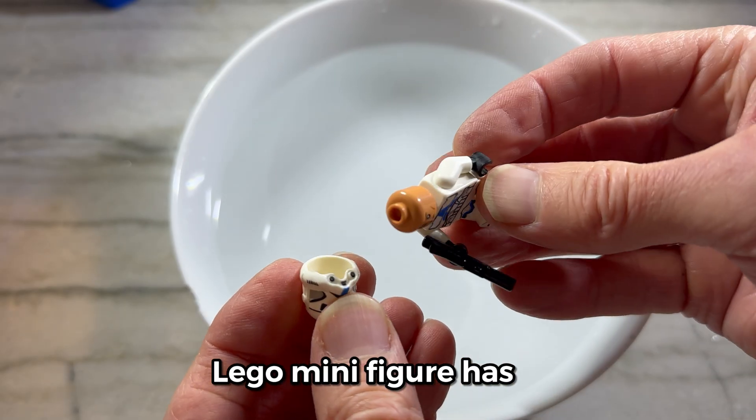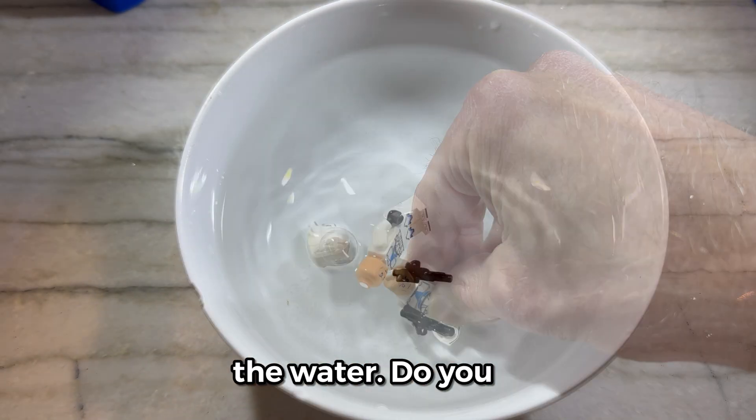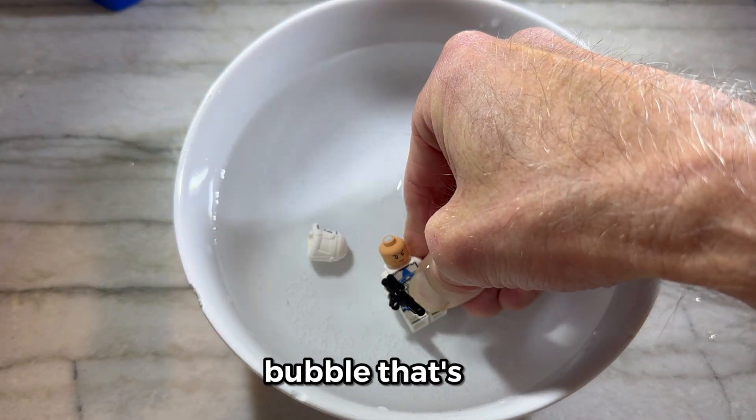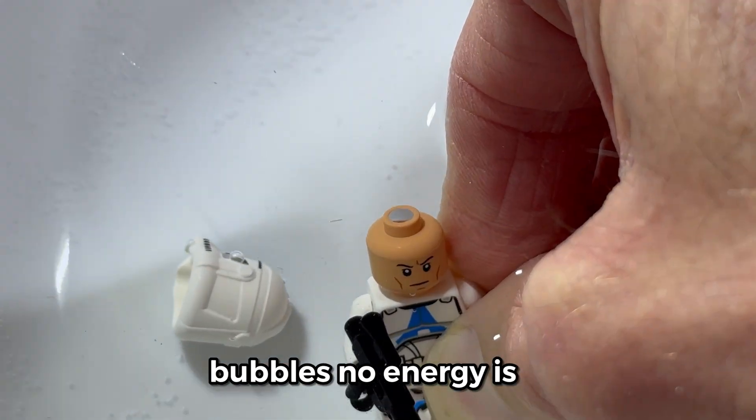You can see that this Lego minifigure has a crevice in the top of its head. Now watch what happens when I drop it into the water. Do you see that little air bubble that's trapped inside the crevice? That's what nucleation sites do. They trap little air bubbles.